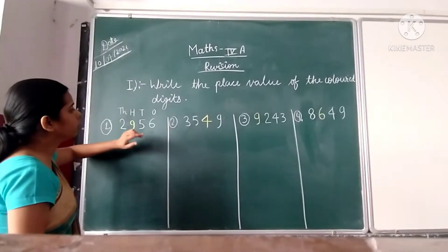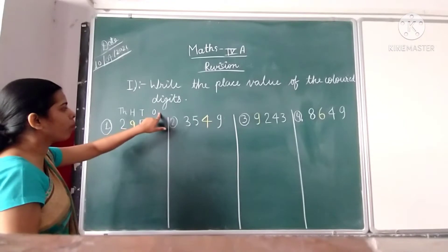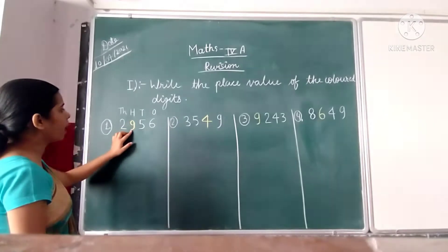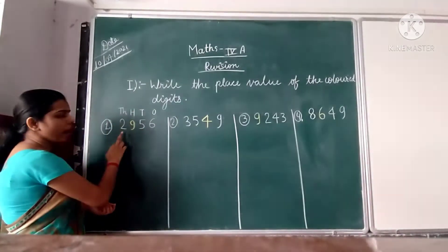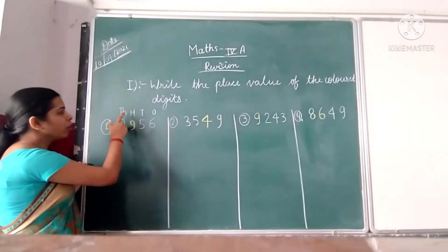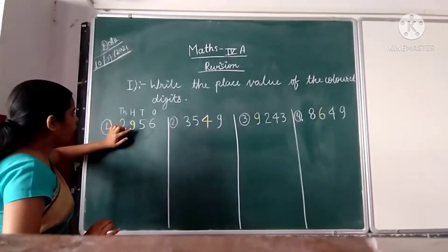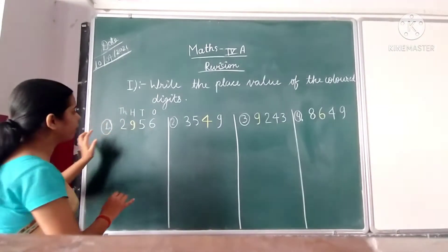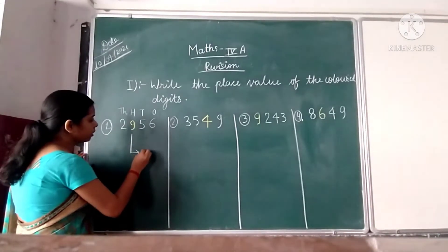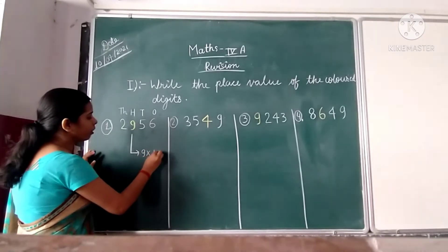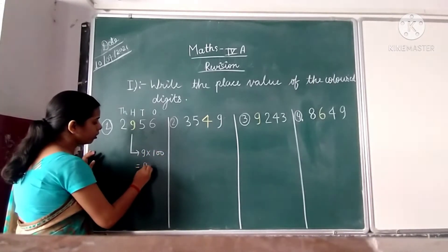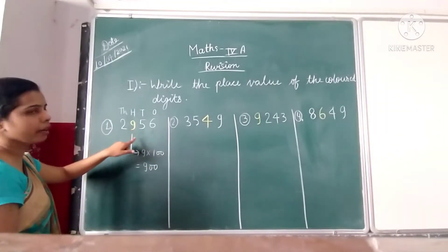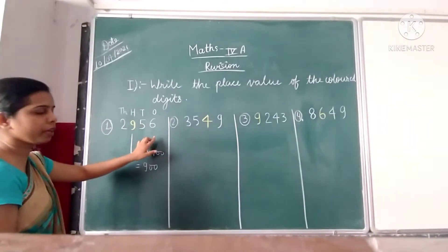In this question, digit 6 represents the value of 1's, 5 represents the value of 10's, digit 9 represents the value of 100's, and digit 2 represents the value of 1000. The place value of 9 means 9 represents the value of 100. That means 9 into 100 equals 900. This is the place value of digit 9 in 2956.